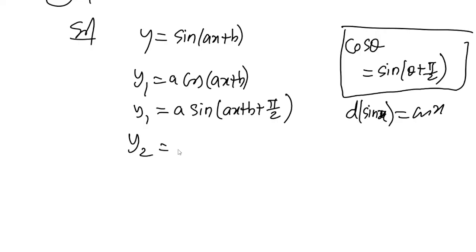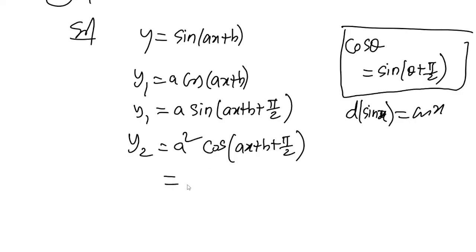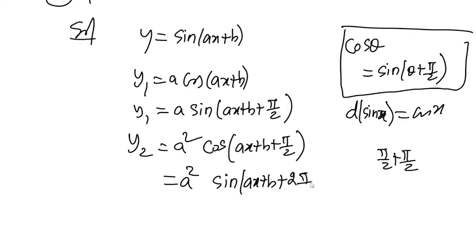Now differentiate y1 to get y2. Differentiating sin(ax+b + π/2) gives cos(ax+b + π/2) · a, and cos = sin(... + π/2), so y2 = a²·sin(ax+b + 2·π/2). For y3, differentiating again gives y3 = a³·sin(ax+b + 3·π/2).